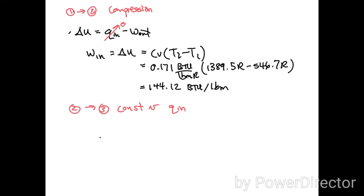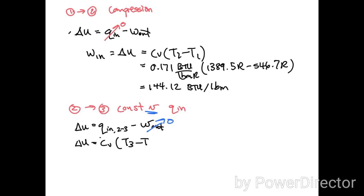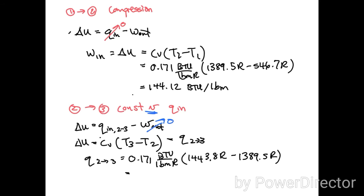From two to three is a constant volume heat input. Writing the energy balance: delta U equals Q_in(2→3) minus W_out. Since it is a constant volume process, no work is done. So Q_in equals delta U equals cv(T3 − T2). Substituting values for heat capacity and the temperatures previously calculated, the heat input during this process equals 9.29 BTU per pound mass.